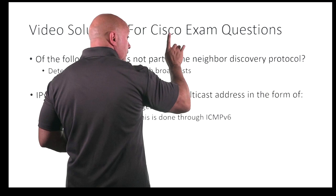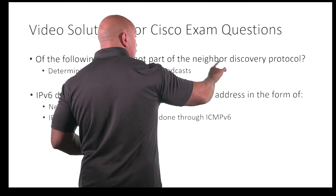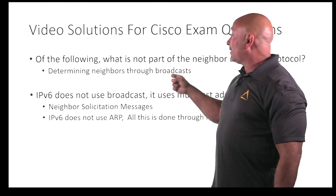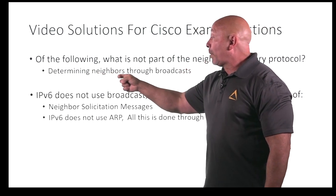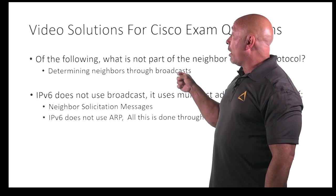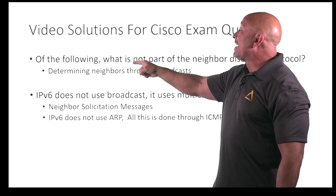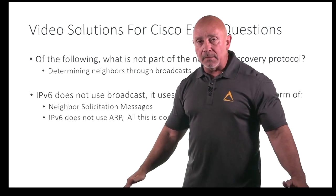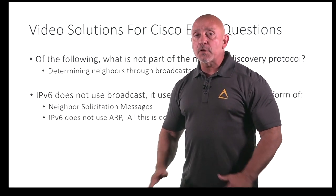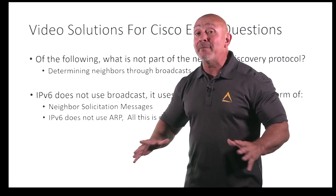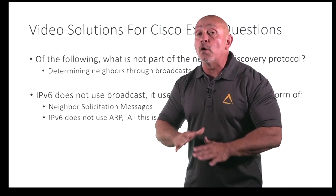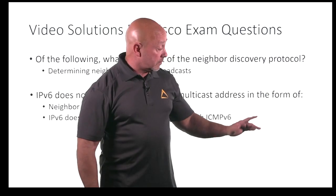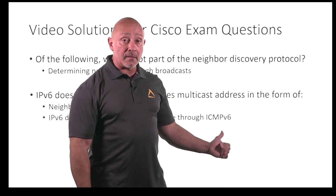This right here — Neighbor Discovery Protocol — means that it's talking about IPv6. So therefore, determining neighbors through broadcast is not part of it, because IPv6 does not determine its neighbors through broadcast. In IPv6 there is no broadcast and there is no ARP. Everything is ICMPv6.